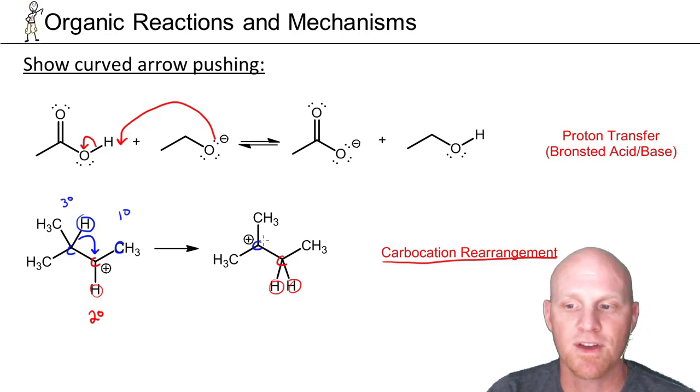That's carbocation rearrangement. The idea is that if you have an adjacent atom that would be more stable being the one missing the bond, being the carbocation, then he'll send something over your direction. We'll definitely study these in more detail soon. But not all carbocations rearrange, only if an adjacent carbon would be a more stable carbocation.